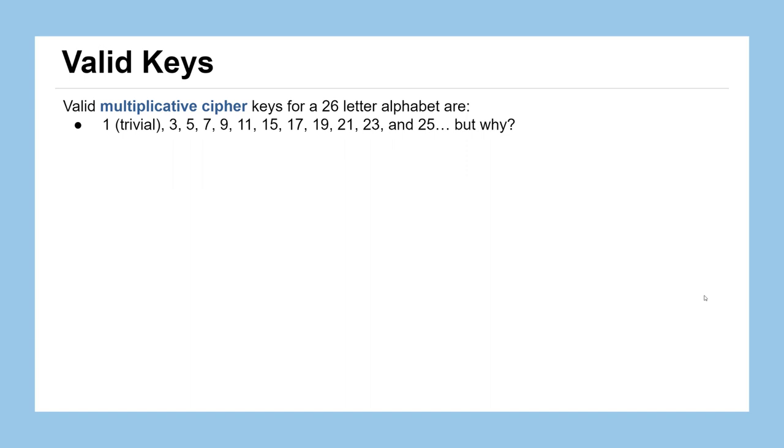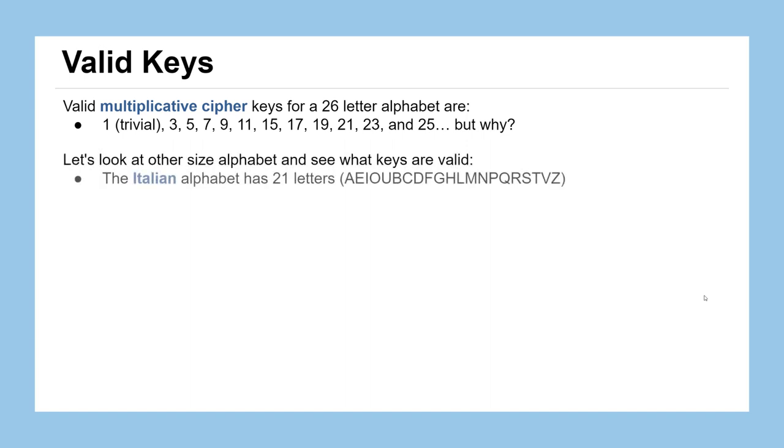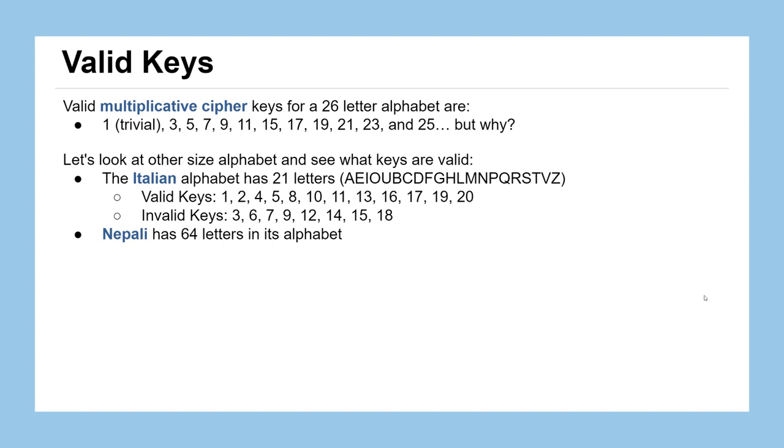To help us solidify that guess, let's look at languages with other alphabets. If we look at the Italian alphabet, it only has 21 letters. The valid keys for those multiplicative ciphers are 1, 2, 4, 5, 8, 10, 11, 13, 16, 17, 19, and 20. Their invalid keys are 3, 6, 7, 9, 12, 14, 15, and 18. If you look at the Nepali language, it has 64 letters in its alphabet. It just works out to be all of the odd numbers. 1, 3, 5, 7, 9, 11, 13, all the way up to 63. And the invalid keys are all the even numbers there.